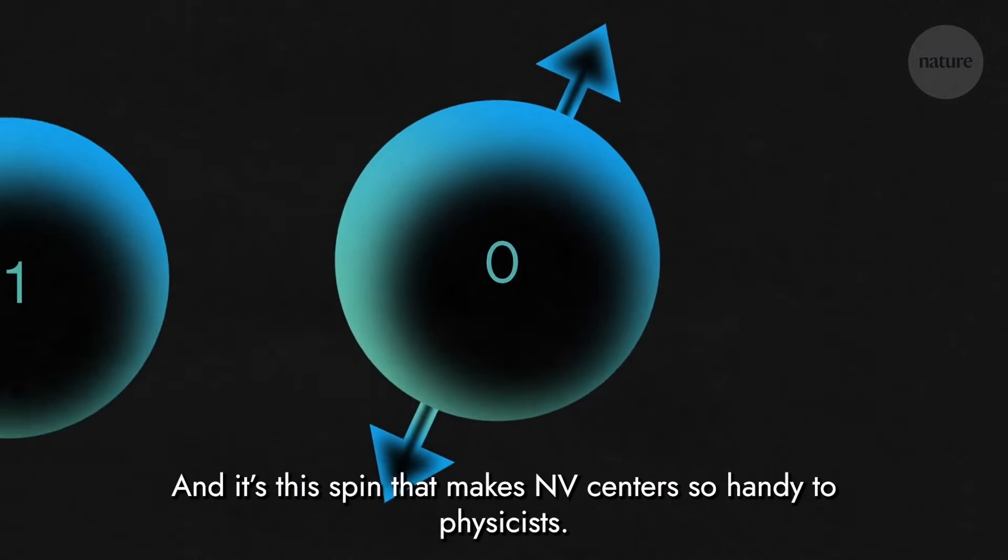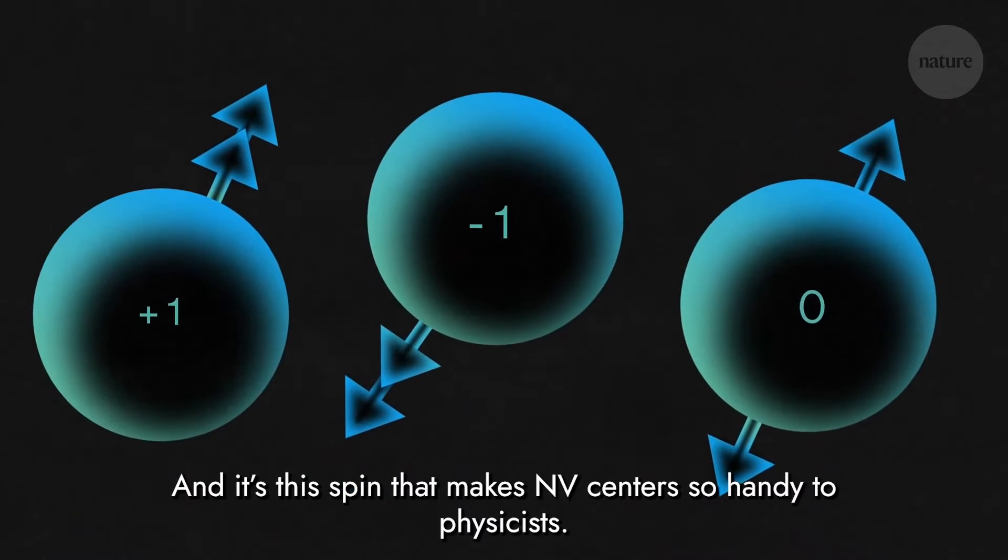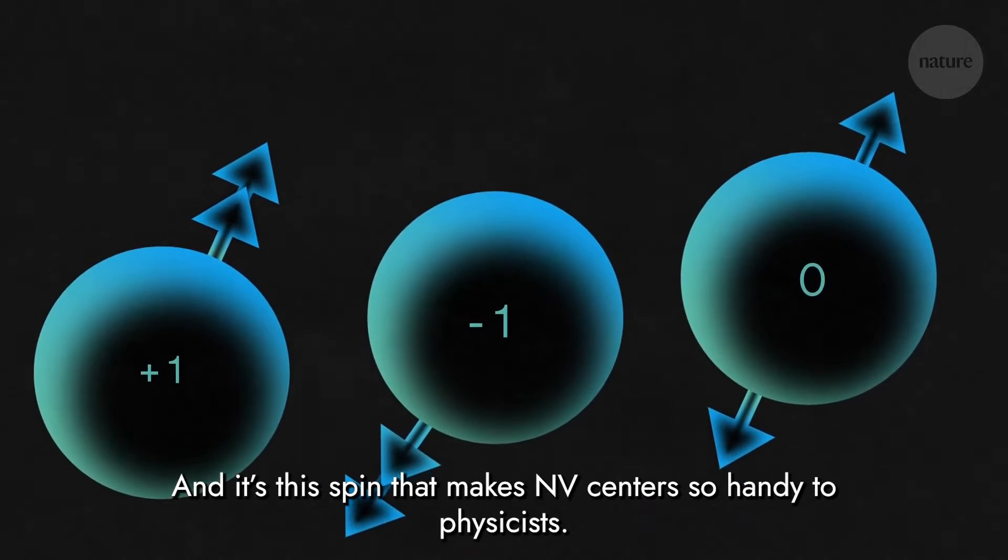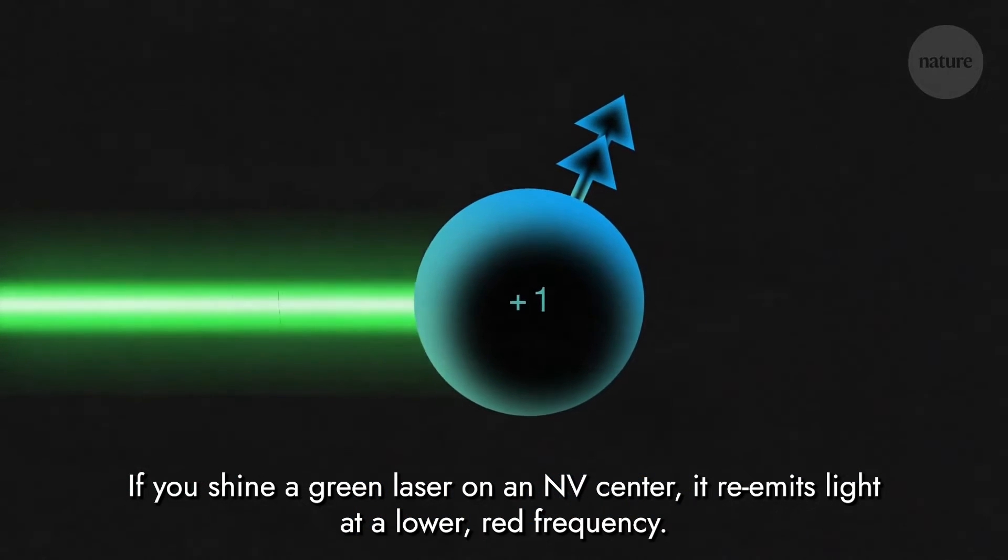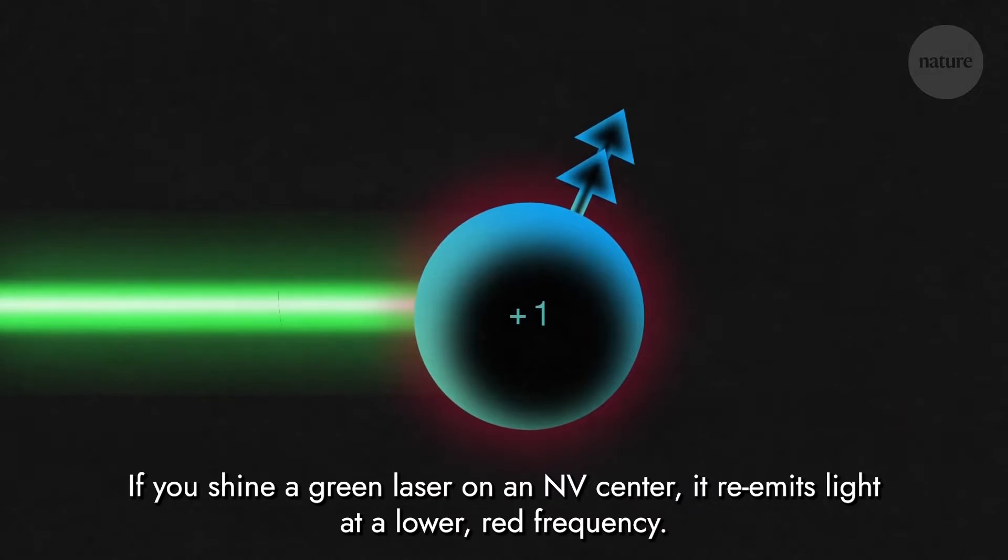And it's this spin that makes NV centres so handy to physicists. If you shine a green laser on an NV centre, it re-emits light at a lower, red frequency.